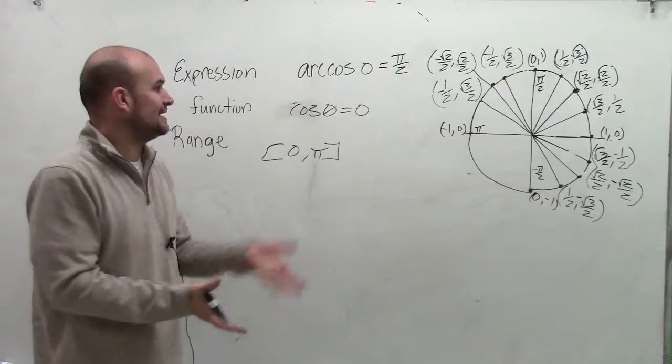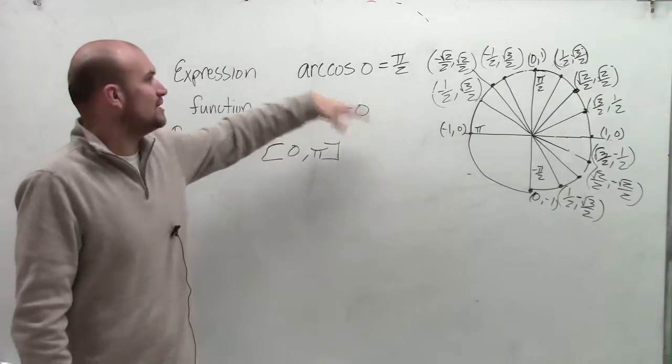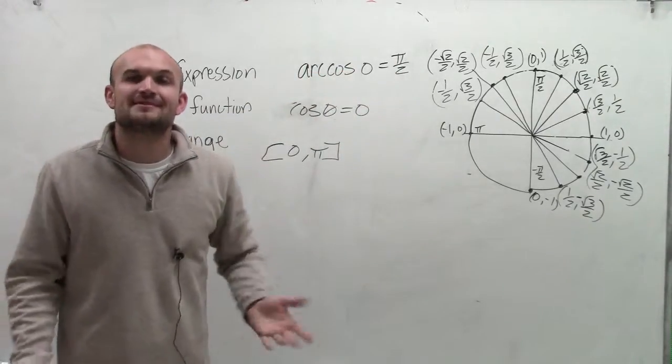So what that says is the cosine of pi over 2 equals 0. Therefore, the arc cosine of 0 equals pi over 2. Thanks, I'll see you then.